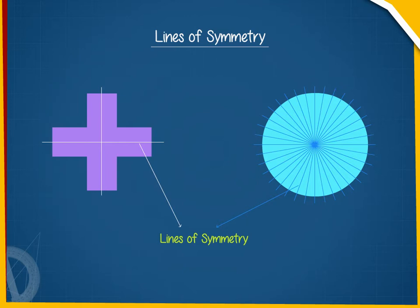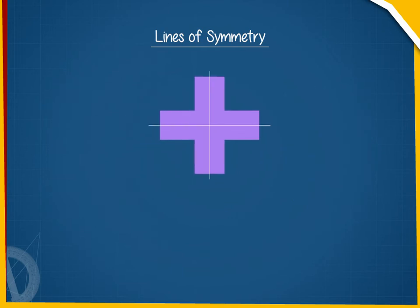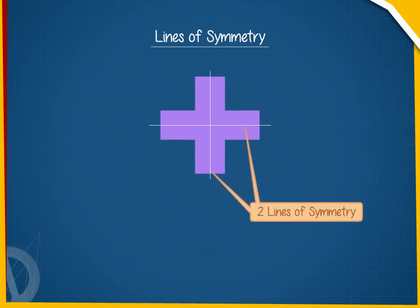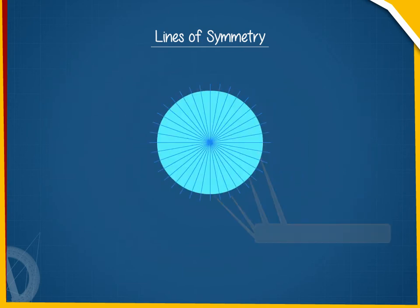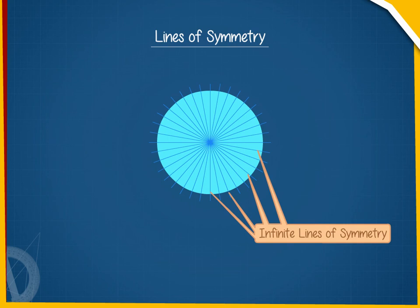Some figures can have more than one line of symmetry. The first figure has two lines of symmetry. The circle has infinite lines of symmetry.